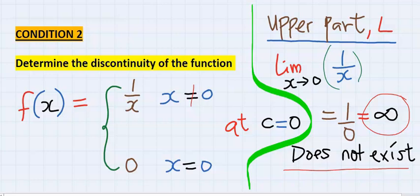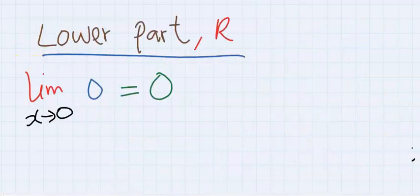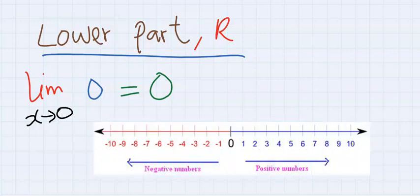Next, let's consider the lower part, which is the right hand limit. Here, the right hand limit exists, which is zero. Zero is an answer, which can be found on the number line.